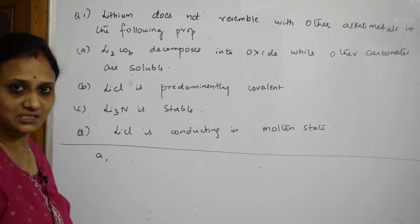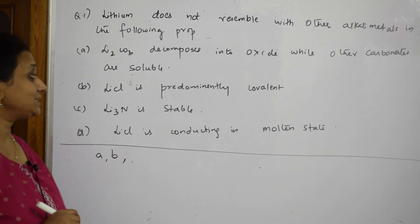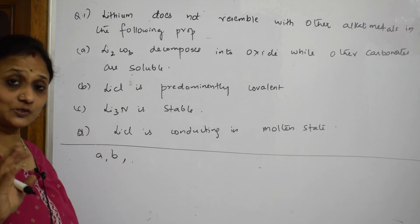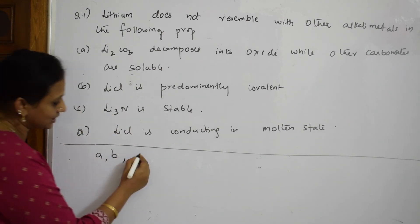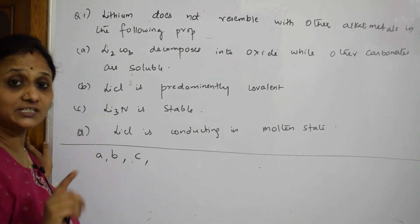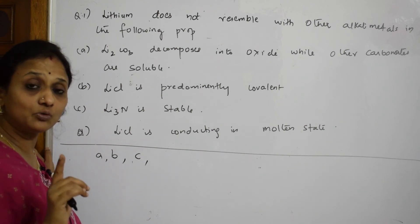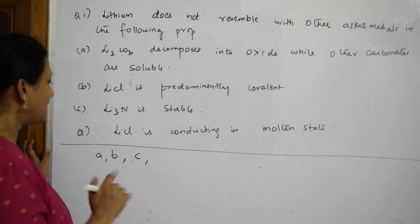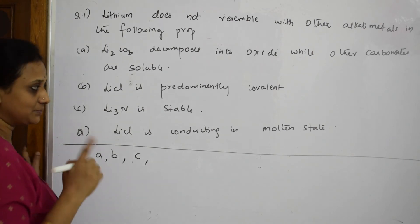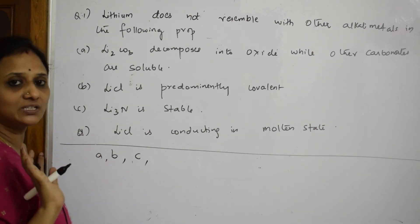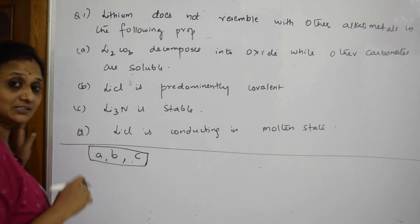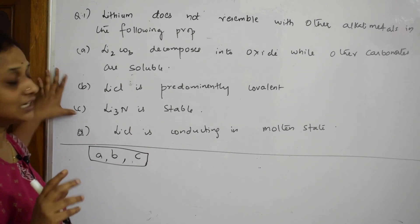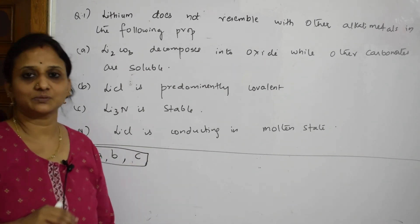Option C: Li₃N is stable — correct, lithium does form a stable nitride, which is also anomalous. Option D: LiCl conducts in molten state — this is wrong, because LiCl is covalent in nature and covalent compounds do not conduct electricity. So options A, B, and C are all properties where lithium does not resemble other alkali metals — the answer is A, B, C.